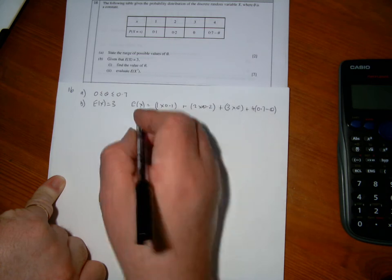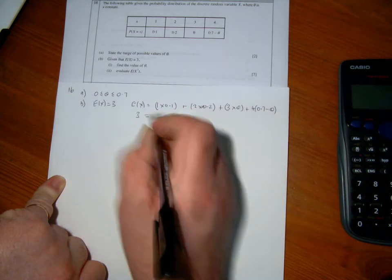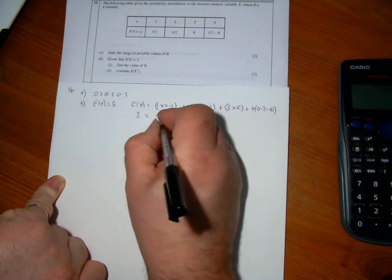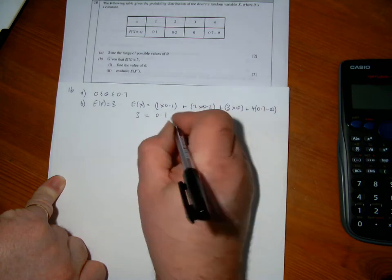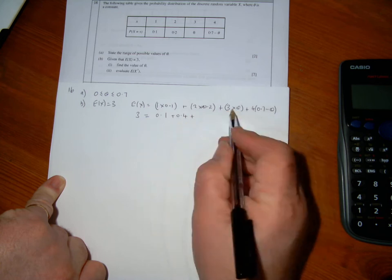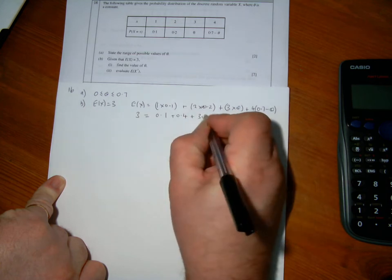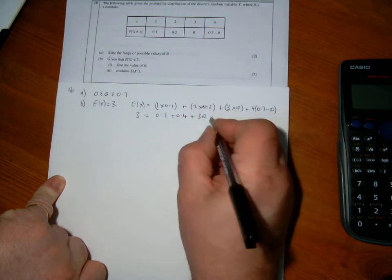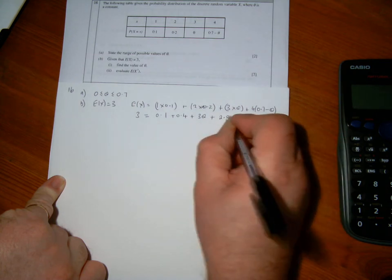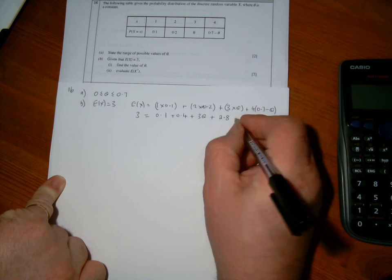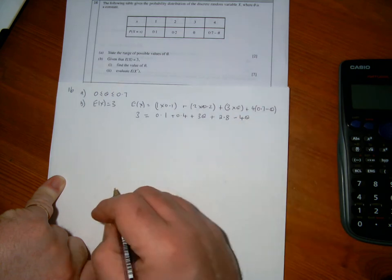So I can form an equation here. 3 is equal to, 1 times 0.1 is 0.1, 2 times 0.2 is 0.4, 3 times theta is 3 theta. Expand the bracket here, 4 times 0.7 is 2.8 minus 4 times theta is 4 theta.